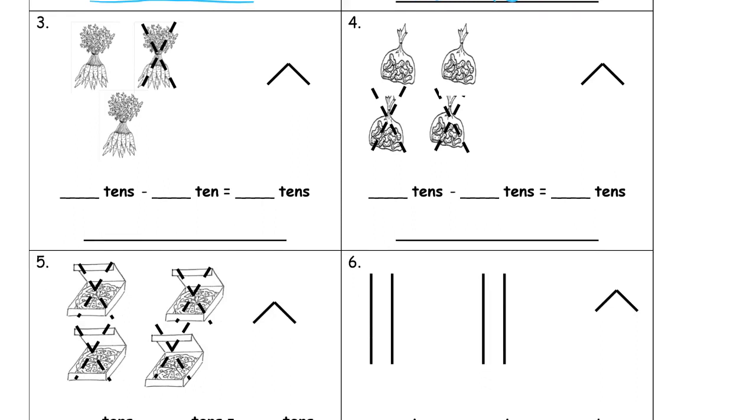And here we have a subtraction number sentence. And you can see here we have something that's crossed out. So we have to use our imagination a little bit to figure out what happened here. We started out with one, two, three tens, before one of them was crossed out. So it's three tens minus, and this is what we subtracted, was one of the tens. So we subtracted the ten, and that leaves how many tens left? Two tens are left.